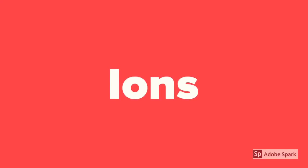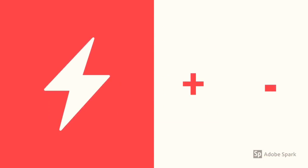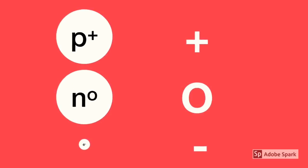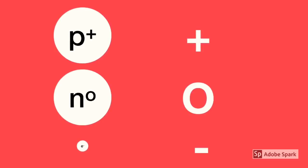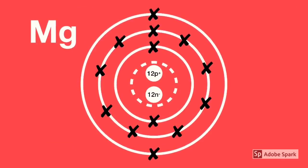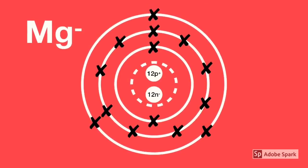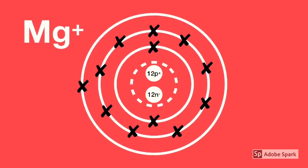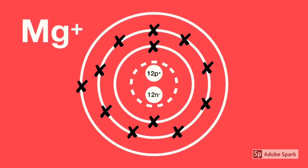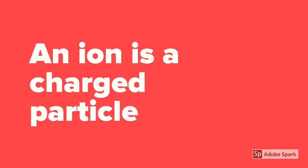Finally, ions. Ions are not to be confused with atoms. Ions have a charge, either positive or negative — atoms don't. Quick reminder: protons have a positive charge, electrons have a negative charge, and neutrons have no charge. To explain ions, I'll use the magnesium atom. This atom is an atom, not an ion yet. If I add an electron to it, it now has a negative charge. And if I took one electron away, then the protons would outnumber the electrons, and so the magnesium atom would have a positive charge. An ion is a charged particle.